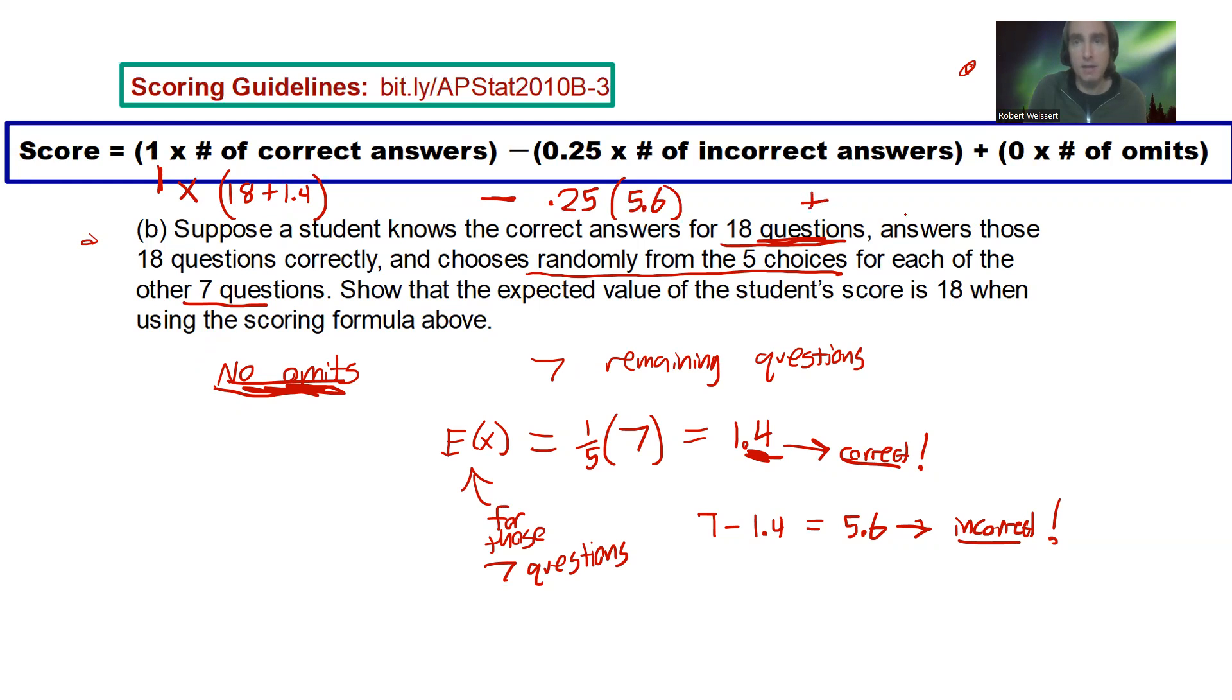And we're going to add zero for the number of omits, which in this case is zero, right? We're not actually going to omit any, but that's going to be zero regardless. So, my expected value is going to be, let's see, 1 times 19.4. Minus 0.25 times 5.6. Now, you do the math. See what you come up with.